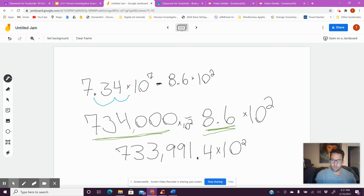Let's fix this. I need to move my decimal 1, 2, 3, 4, 5 times. When I move my decimal 5 times, I end up with 7.33991.4.